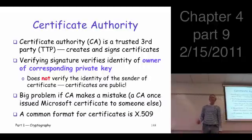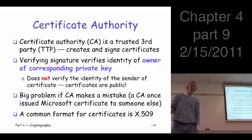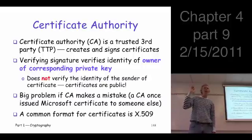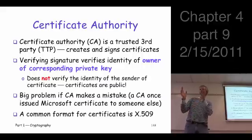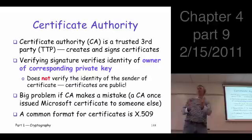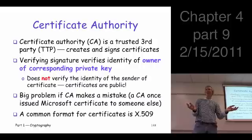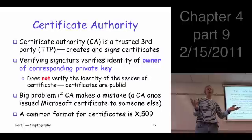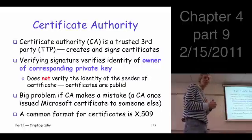What if the CA is trying to do the right thing but makes a mistake? VeriSign actually did this a couple of years ago — they created a digital certificate for Microsoft, put it out there, but gave the corresponding private key to nobody knows who. It wasn't Microsoft. Somebody else got the private key. That means electronically, whoever had that private key could act as Microsoft. It was revoked right away, and nobody knows what happened to it, but it's potentially a serious problem.